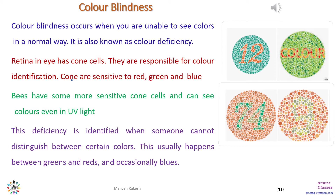In the first video we learned that the retina has cone cells which are responsible for the identification of color. If these cone cells are not properly developed or are insufficient in quantity, we are not able to identify or distinguish between red, blue, and green colors — that deficiency is known as color blindness. The human eye cannot see or distinguish colors in UV light, whereas bees, which have more cone cells, can identify colors even in UV light.